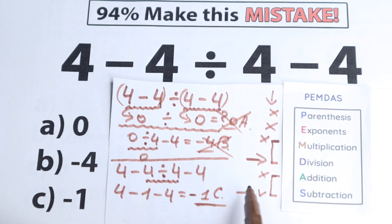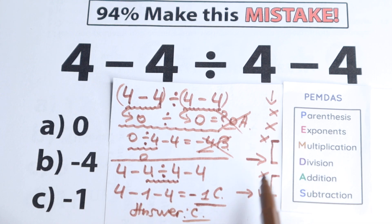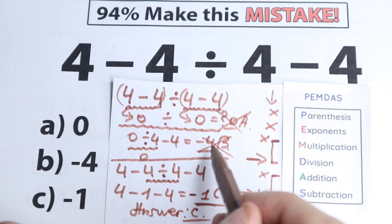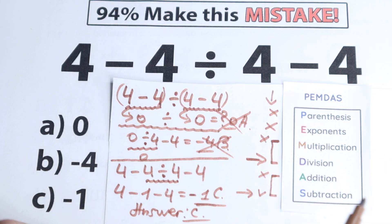Minus 1 is the absolutely correct solution because division is always before subtraction. I hope you understand this explanation. Don't feel bad if you got it wrong — I feel like one part of you got 0 and another part maybe minus 4. I wish you all the best, I hope you learned something new. Thank you for your time and have a great day.